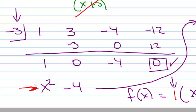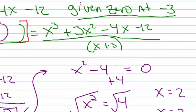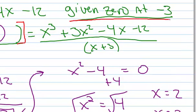So this is an example of how to find the fully factored form of a polynomial given a zero. And that's by using synthetic division.